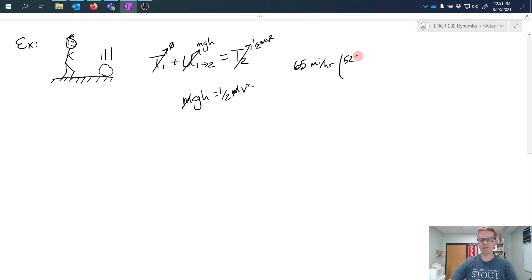By multiplying by 5280, which is feet per mile, and dividing by 3600 seconds per hour, we can see that my units work out here to feet per second and I get 95 and a third feet per second.